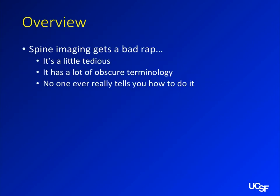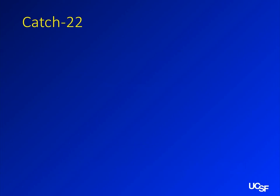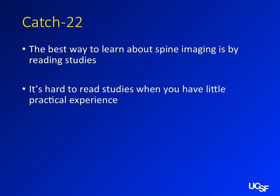Spine kind of gets a bad rap. It's sort of the tedious part of radiology — a lot of people don't like to do it. It's got a lot of obscure terminology that varies from attending to attending. But there is a pretty interesting variety of disease processes in the spine, because the spine is really just an extension of the central nervous system. The catch-22 is that the best way to learn about spine is by reading the studies, but it's hard to read them when you have no experience with the terminology — things like uncovertebral joints. I'm going to try to fill in some of those gaps and clarify those things.